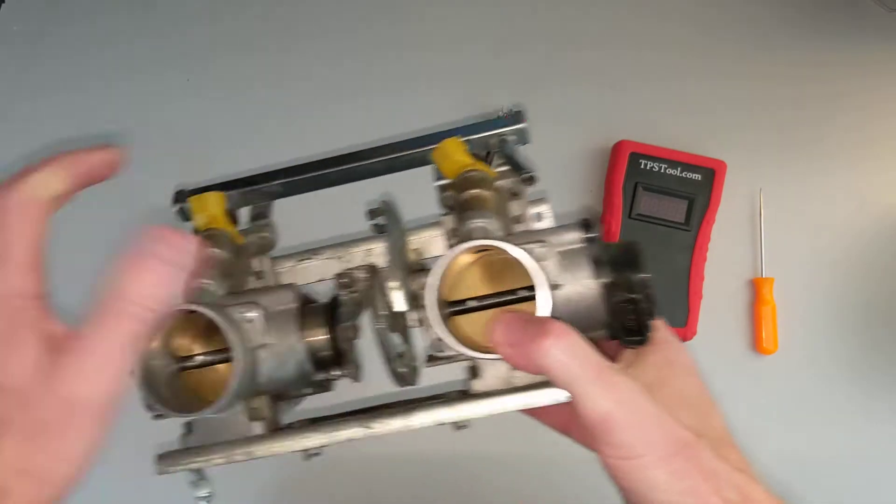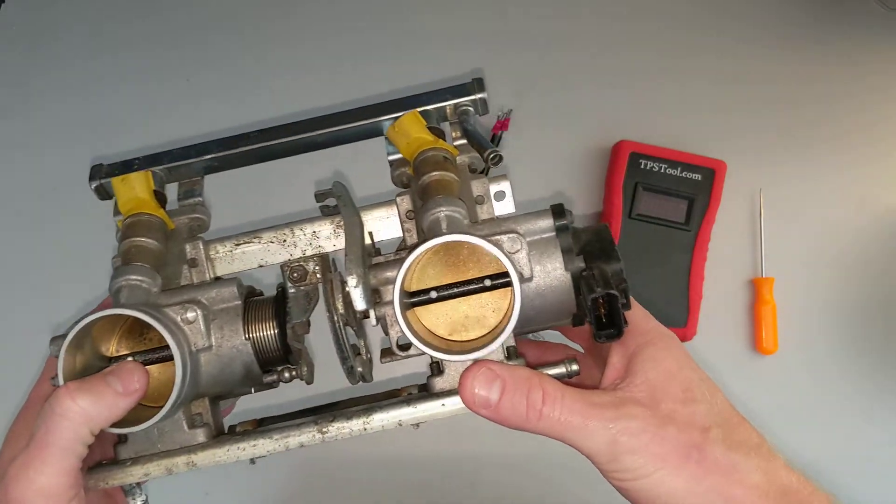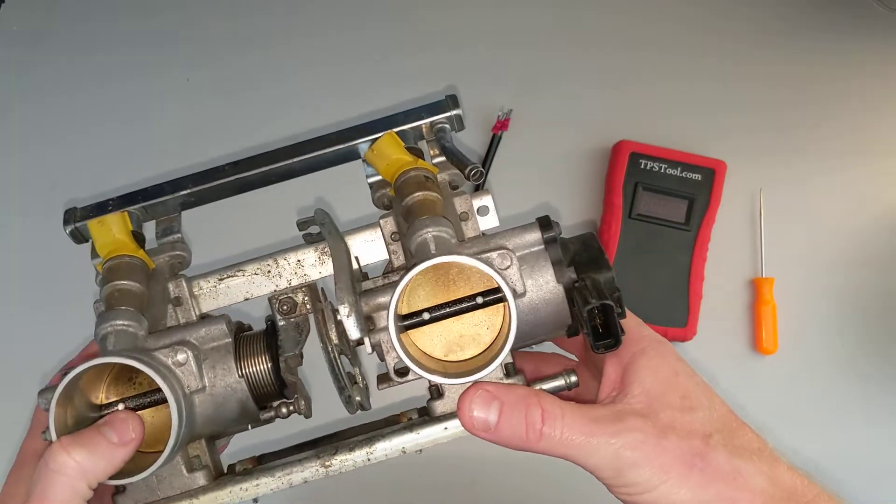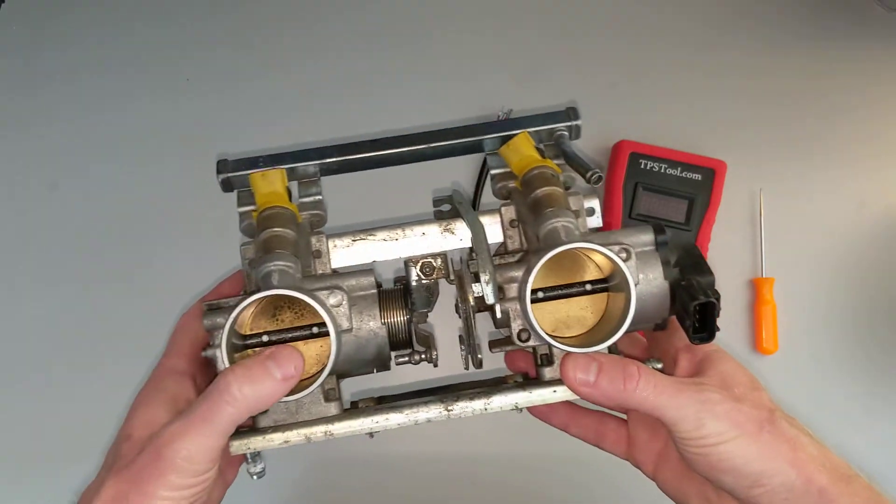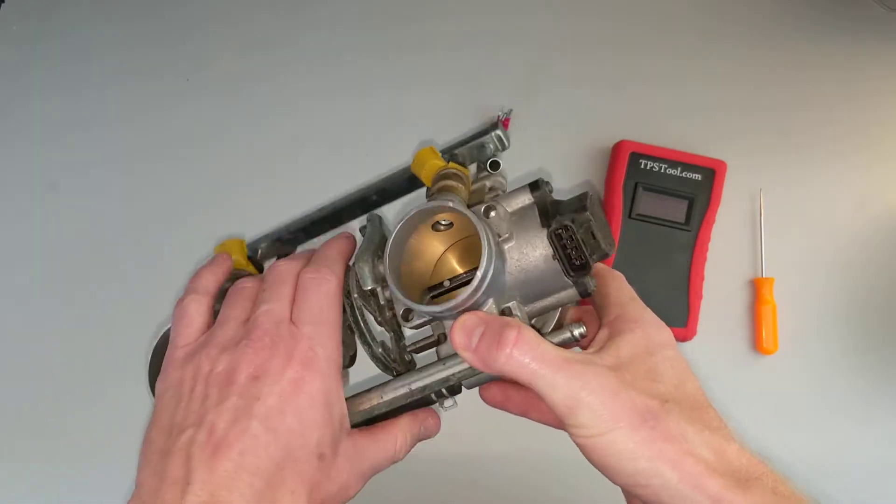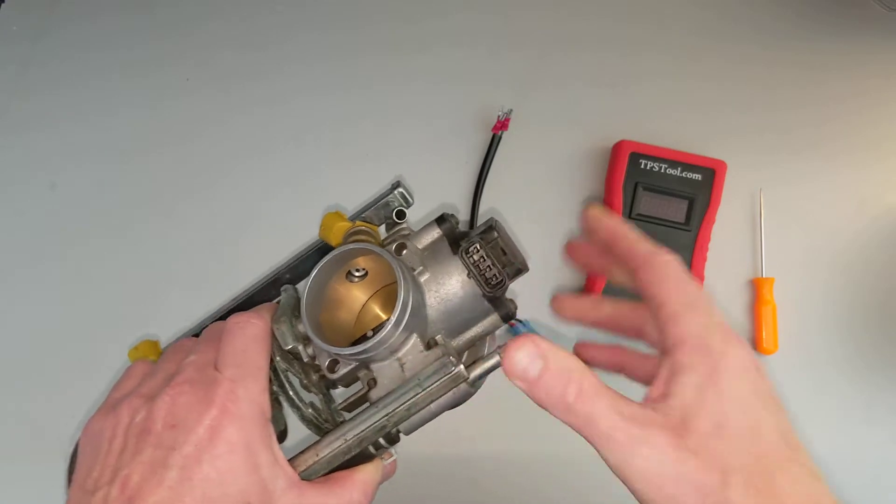This one is on an Arctic Cat. This throttle body is from an Arctic Cat M8, also used on the F8 and the 800 Crossfire. This one is from the 2008 era, so if you've got one from that model year, this will look familiar to you.